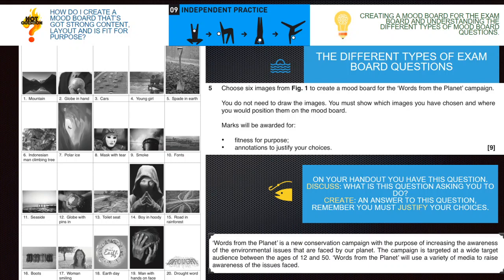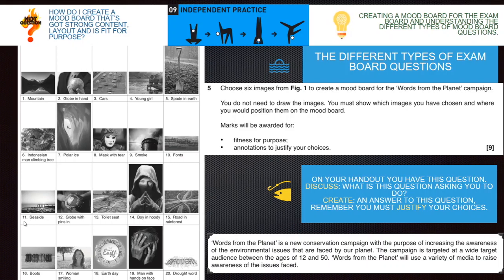Words from the Planet is a new conservation campaign with the purpose of increasing the awareness of the environmental issues that are faced by our planet. The campaign is targeted at a wide target audience between the ages of 12 and 50. Words from the Planet will use a variety of media to raise the awareness of the issues faced.